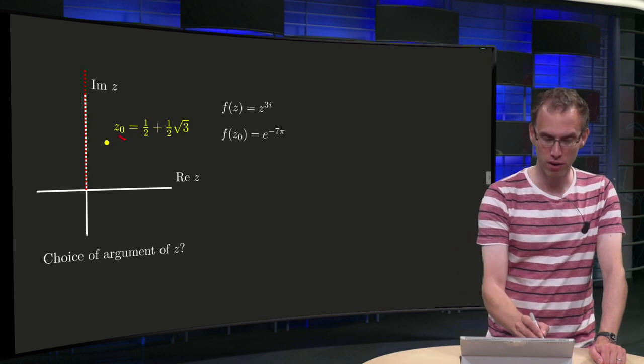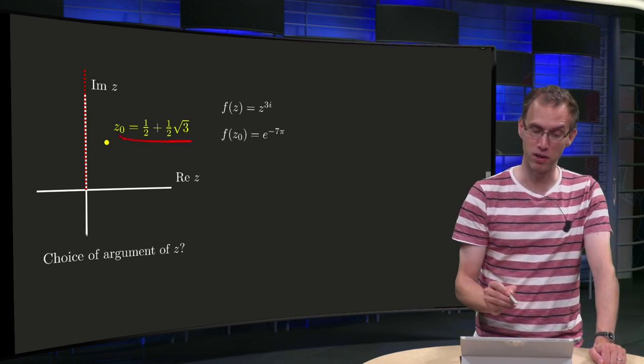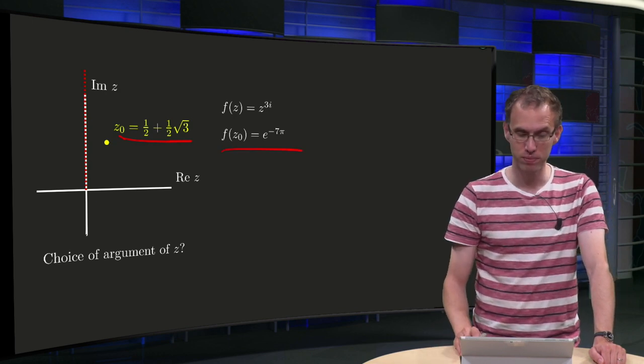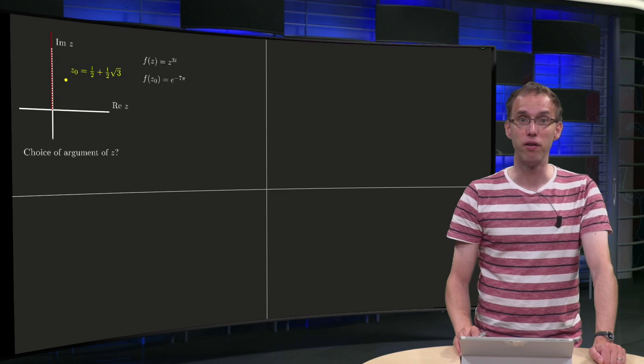So what's given for this z0 over here, 1 half plus 1 half times the square root of 3, the function value is given as e to the power of minus 7pi. So first question,